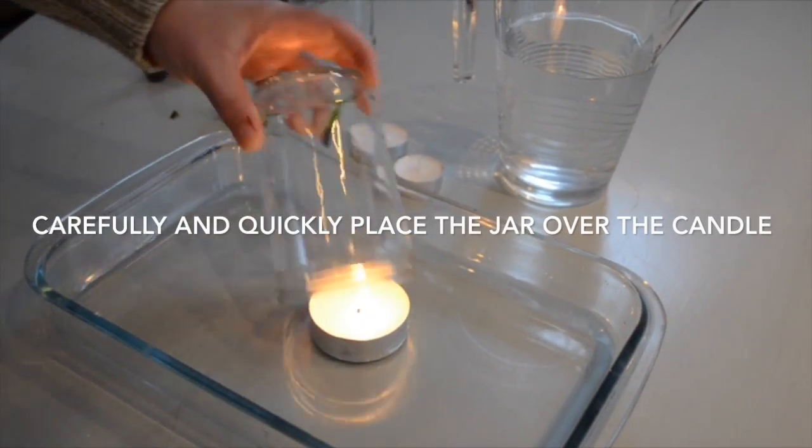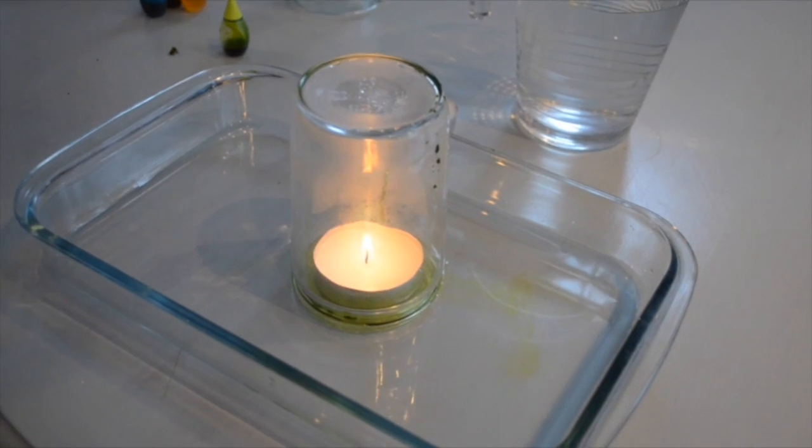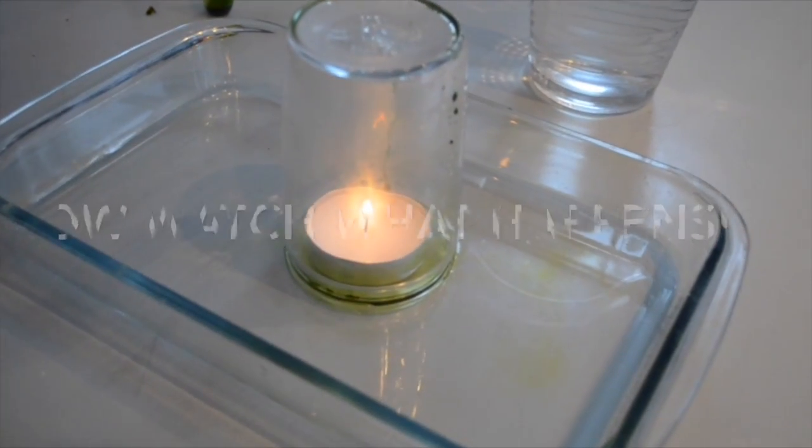Now, take your mason jar and tip it over quickly over your candle. Try not to let any food coloring escape. A little bit has here. Now watch what happens.